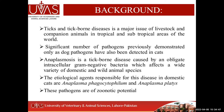There are different species of anaplasma: anaplasma centrale and marginale, which affect bovines and other livestock, while anaplasma phagocytophilum and platys are mainly involved in causing disease in domestic cats. Both of these pathogens have zoonotic potential — they can cause disease in human beings. Since cats live in close proximity with their owners, it is very easy to transmit these pathogens to humans, making them of one health importance.